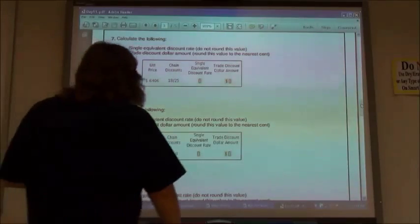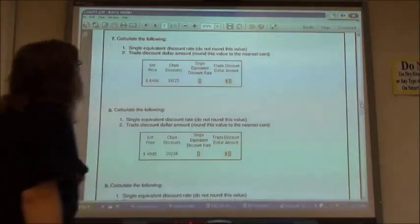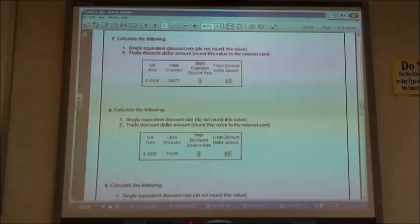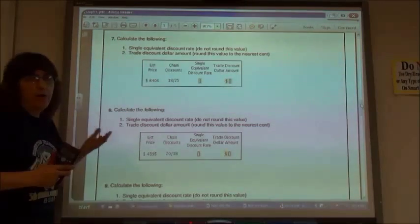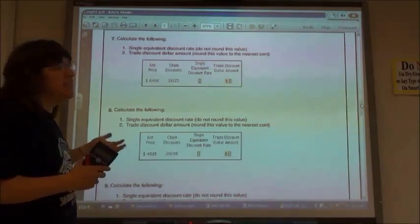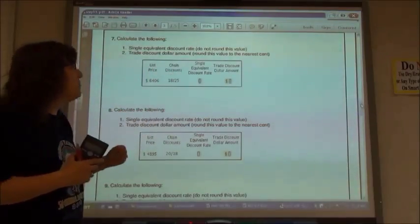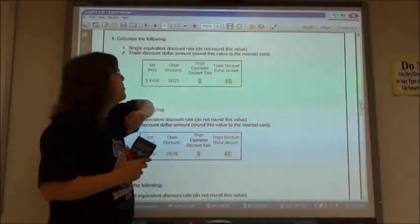So number 789, it wants us to calculate the single equivalent discount rate and then the trade discount dollar amount. On your invoice, a lot of times, instead of listing just what the end value is going to be, you need to list what the discount is going to be.